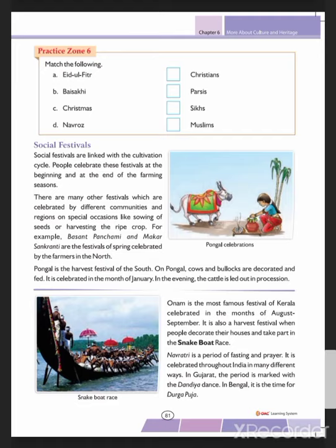Onam is the most famous festival of Kerala, celebrated around August–September. It is also a harvest festival when people decorate their houses and participate in the famous snake boat race.